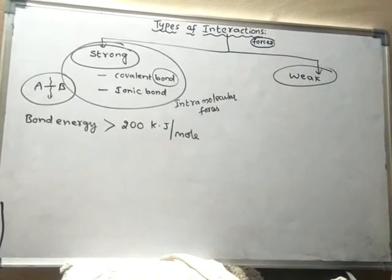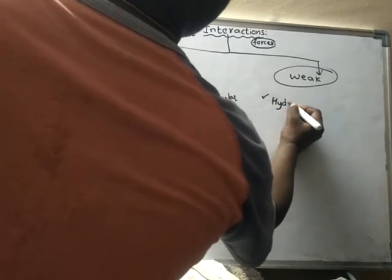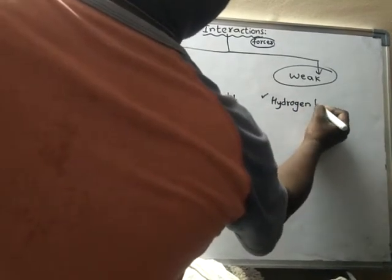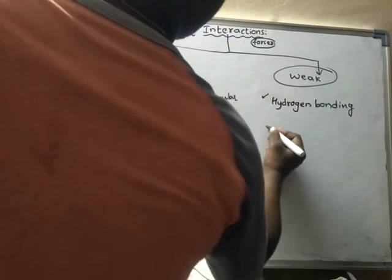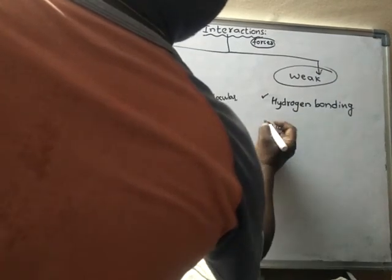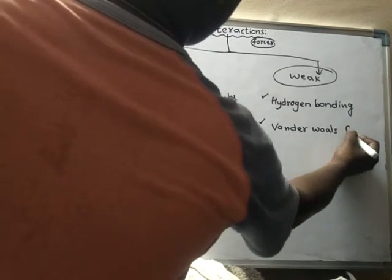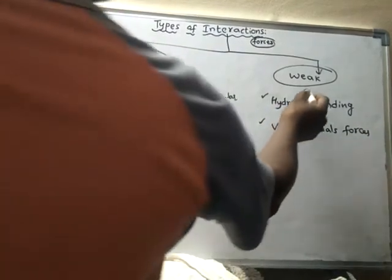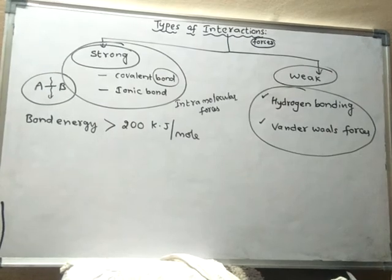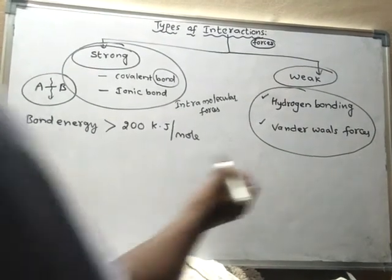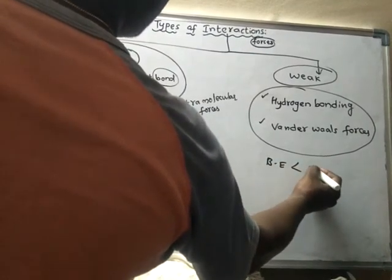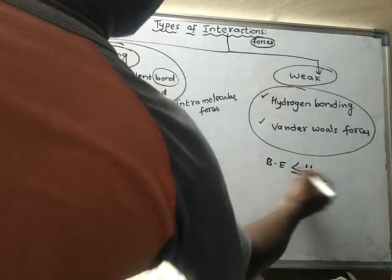Now, what are weak forces? There are two types of weak forces: hydrogen bonding and van der Waals forces. These are very weak forces. Generally, their bond energy values will be less than or nearly equal to 40 kilojoules per mole.